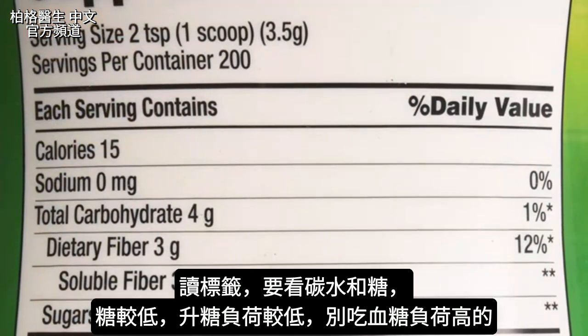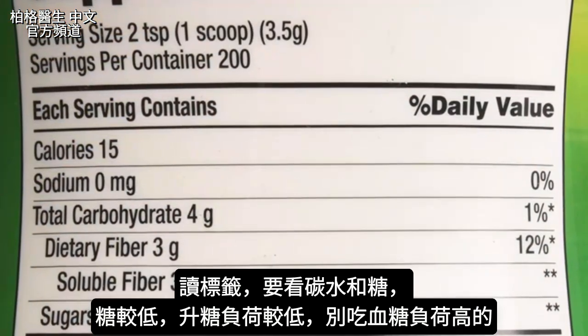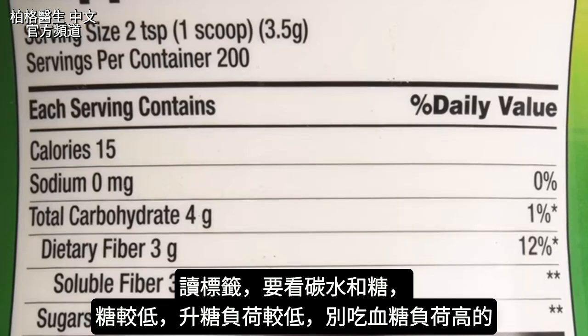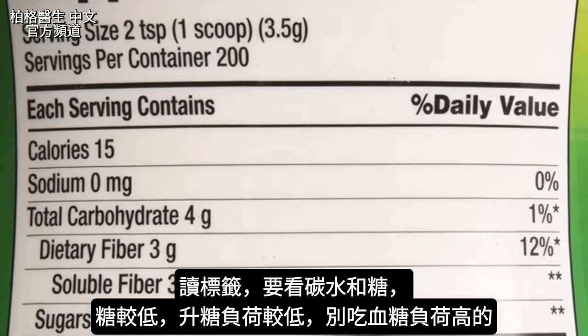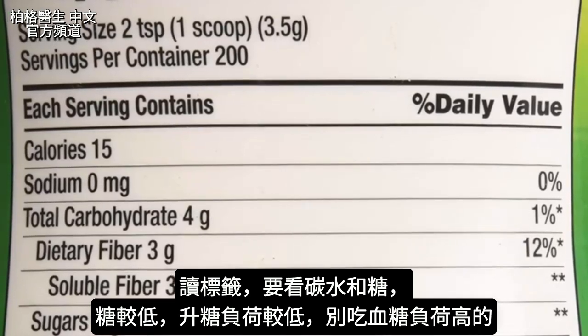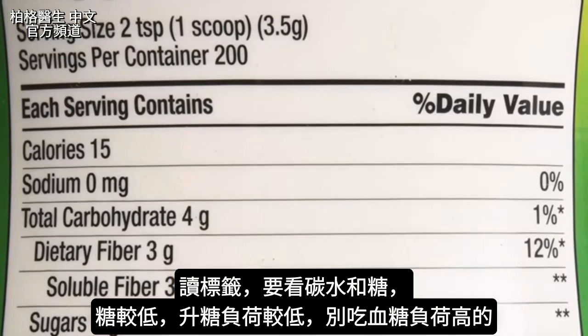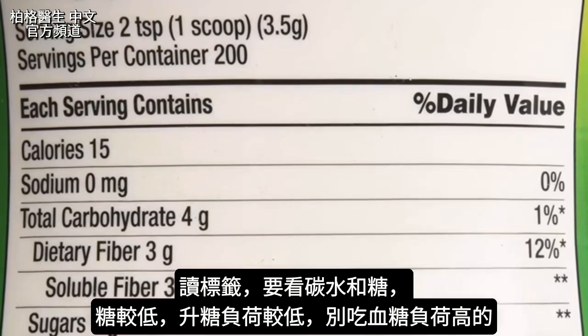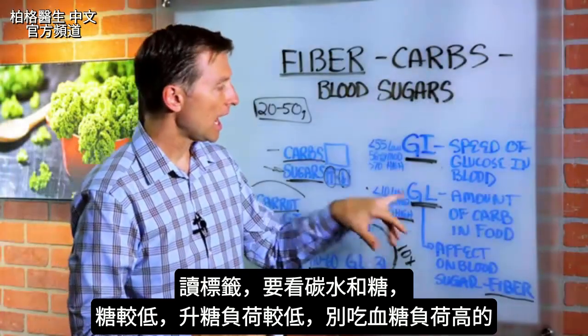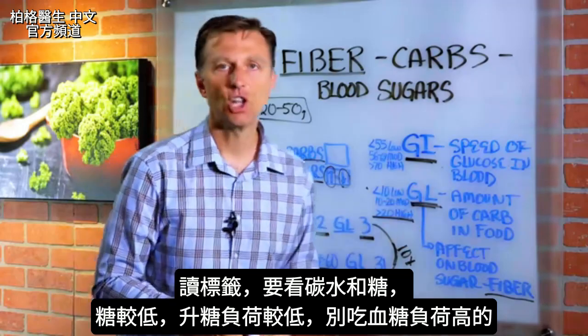So now when you read labels, don't just look at the carbohydrates — look at the sugar levels. If the sugars are lower, chances are they're lower on the glycemic load. And avoid the ones with a high glycemic load.